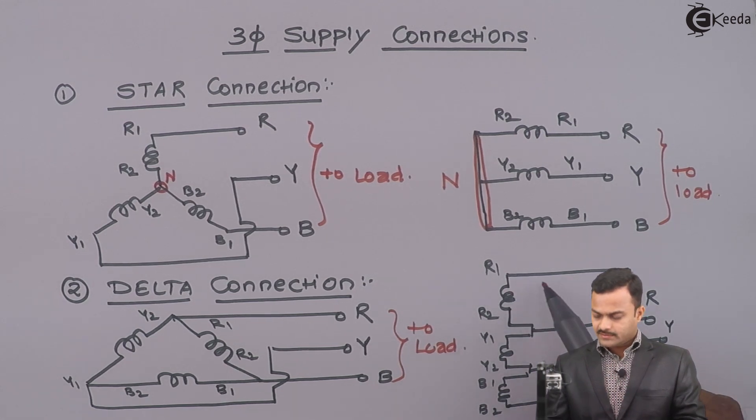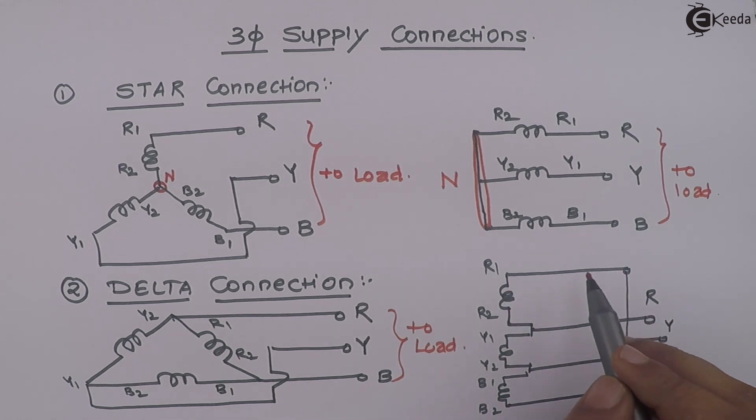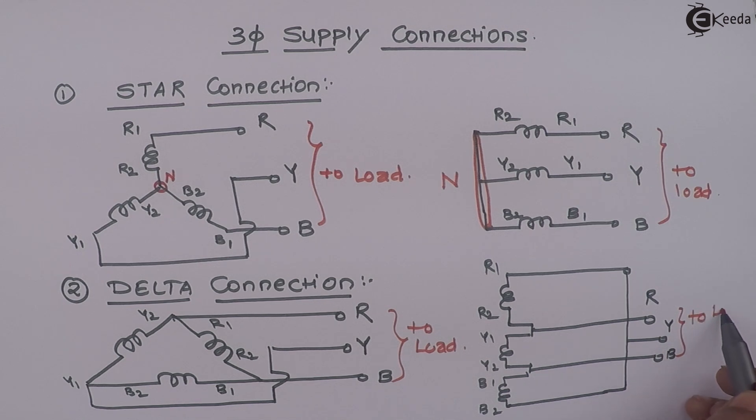See here, three windings connected such a way that they are forming a loop. So, loop could be anything. Not necessarily, it should be a triangle. It could be of any shape. But make sure that it should be a closed path. And then these three ends are taken for load connection.